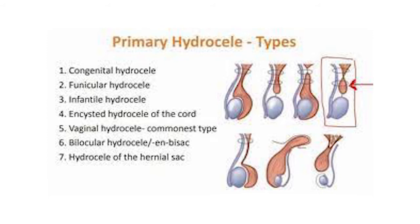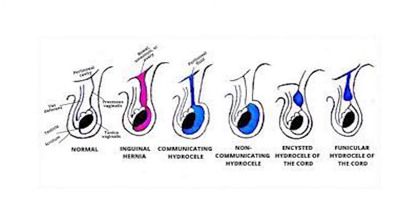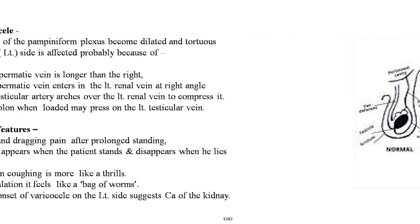Here is a good image of the primary hydrocele. The types of hydrocele are: congenital hydrocele, funicular hydrocele, infantile hydrocele, encysted hydrocele of the cord, vaginal hydrocele (the commonest type), bilocular hydrocele, and bilocular hydrocele of the hernia sac. Seven pictures are clearly shown for every type. Another picture shows the normal structure, then inguinal hernia in pink color, communicating hydrocele, non-communicating hydrocele with obliteration of the sac, encysted hydrocele of the cord with no connection distally or proximally, and funicular hydrocele of the cord.